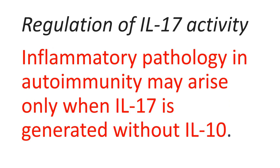T-Helper 17 cells producing both interleukin-17 and interleukin-10 at the same time will manage infection without causing harmful effects. On the other side, inflammatory pathology and autoimmunity may arise only when interleukin-17 is generated without interleukin-10. This phenomenon partially explains how the same cell type can contribute to both autoimmunity and protective immunity against infection.